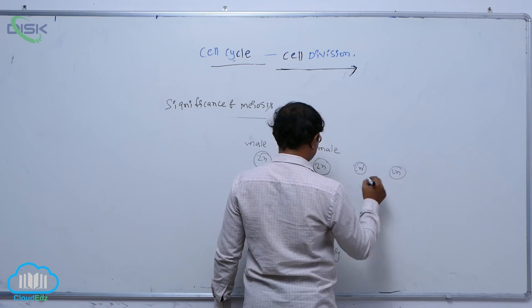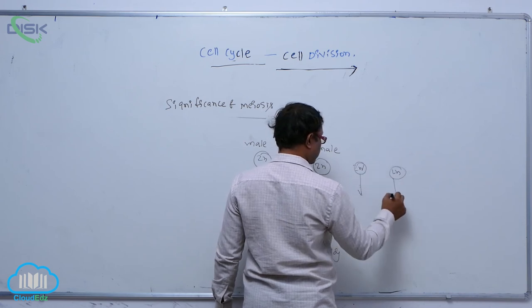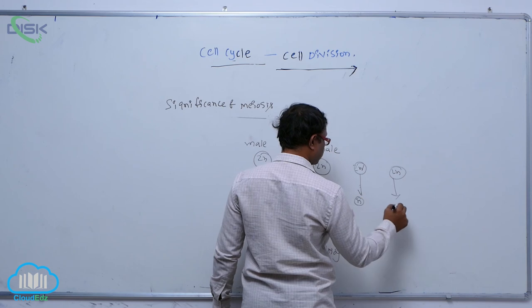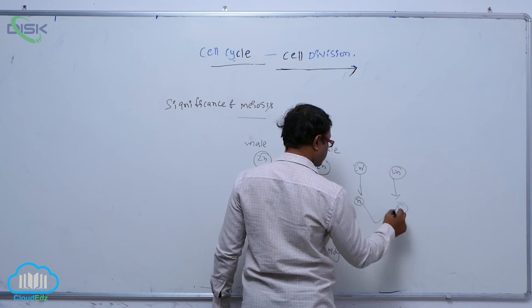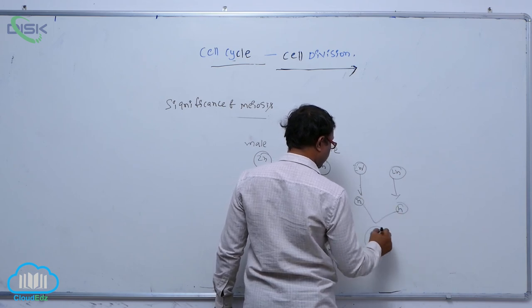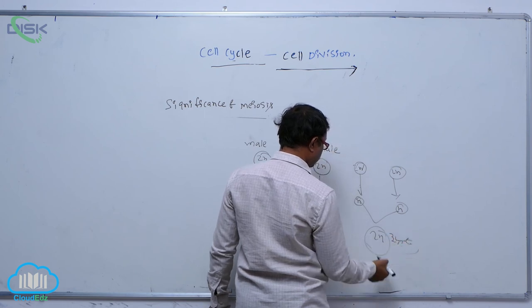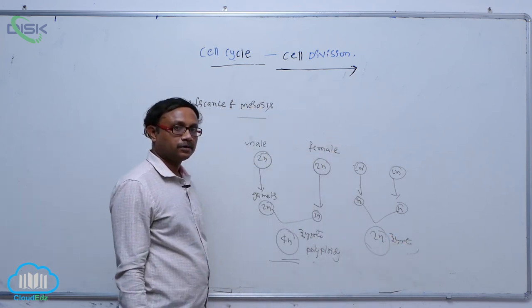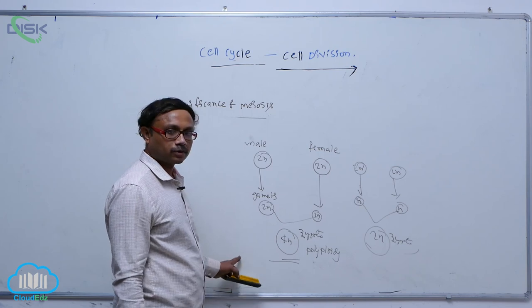It is a reduction division is occurring. It is a haploid. Then both are haploid, fuse to form that diploid. So that is a reach to that basic number of the chromosome.